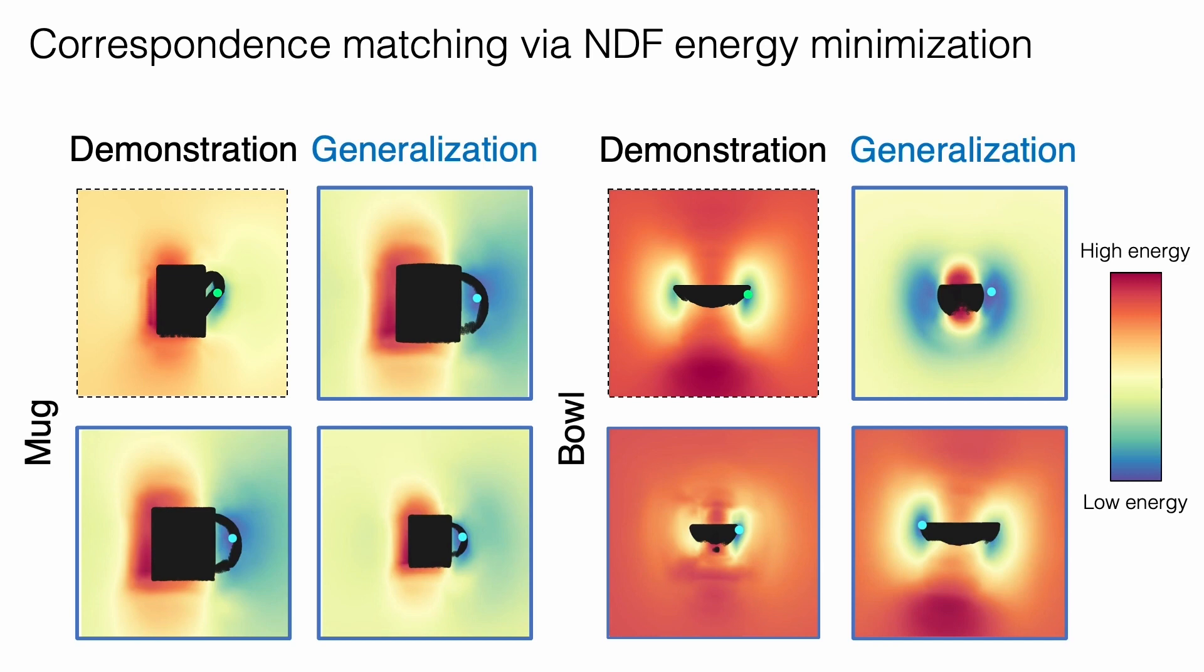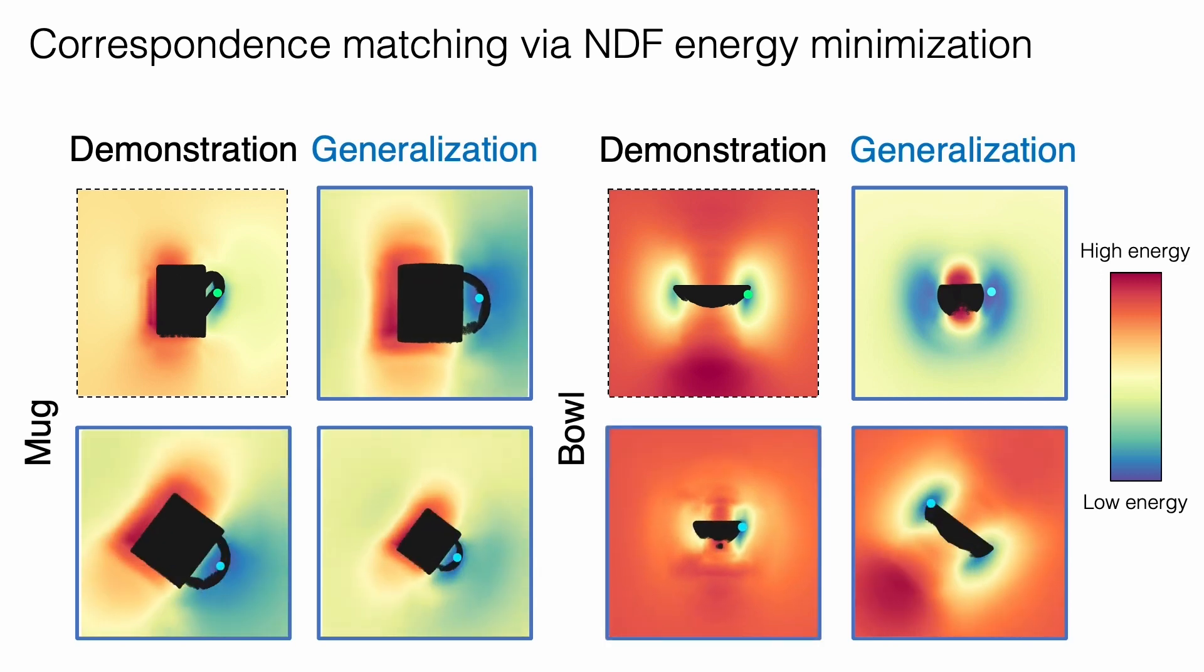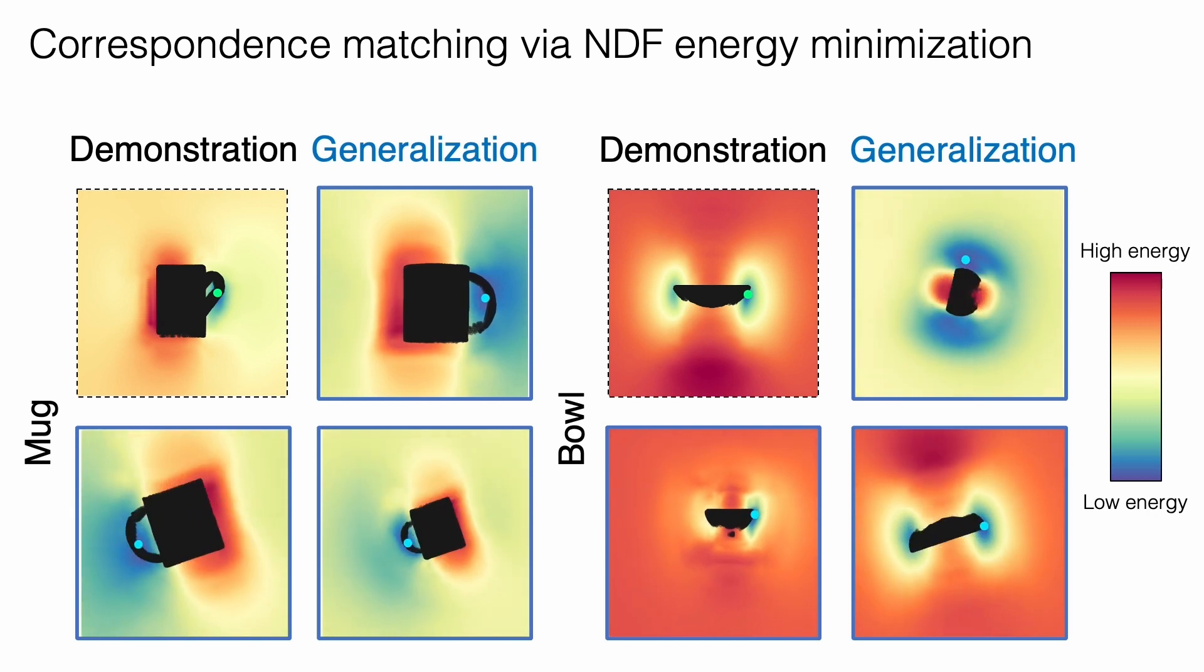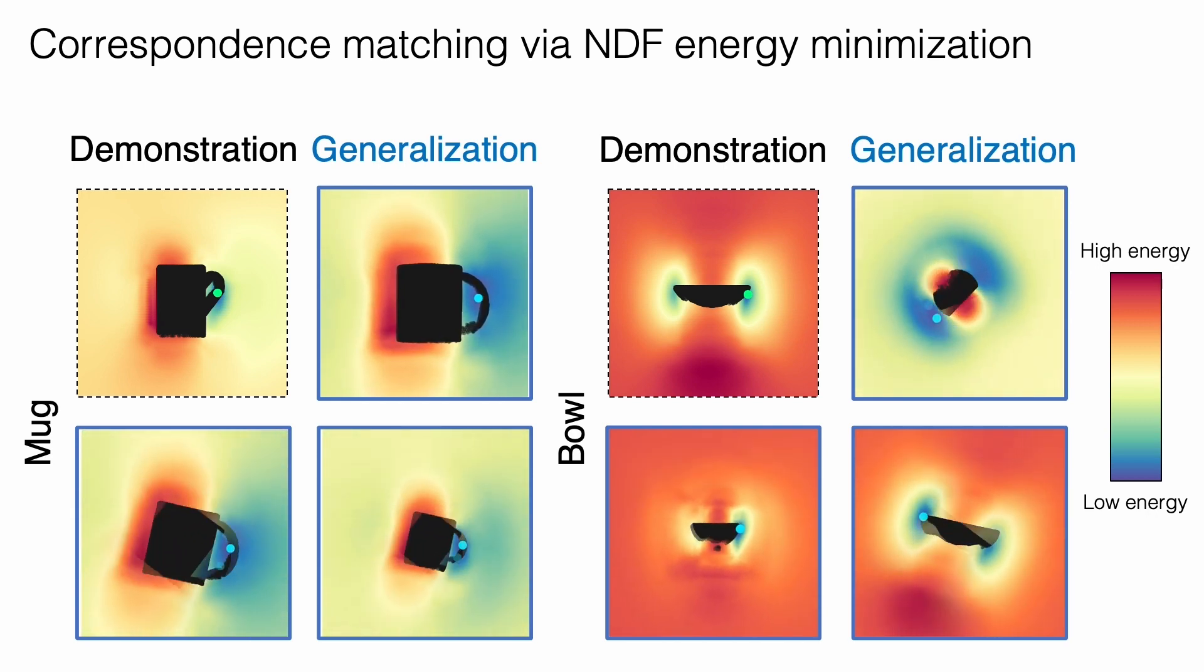We illustrate this energy landscape for both mugs and bowls. Target points on the demonstration point cloud are shown in green, and the inferred corresponding point for a new shape is shown in blue, at the minima of the energy landscape. Due to equivariance of our descriptor field, rotations and translations of the shape lead to corresponding transformations of the energy landscape.